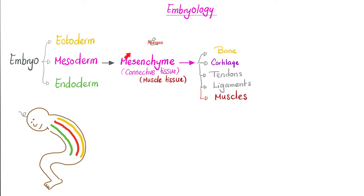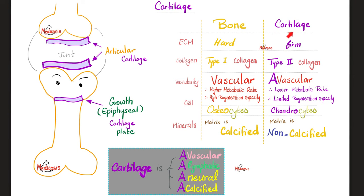All cartilages come from the mesenchyme, which is mesoderm. Cartilages are different from bones — they are firm, contain type 2 collagen, have no vessels, which is why they have a lower metabolic rate and limited regeneration capacity. Chondrocytes are the cells of the cartilage, and the matrix is not calcified. In other words, cartilage is non-vascular, non-lymphatic, non-neural, and non-calcified.